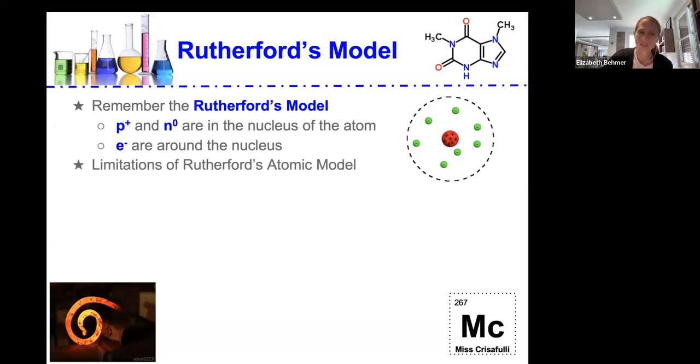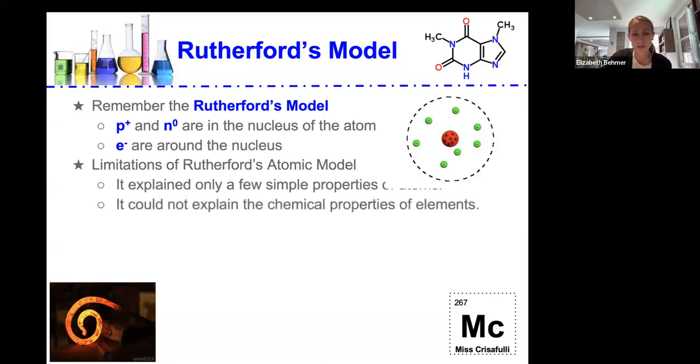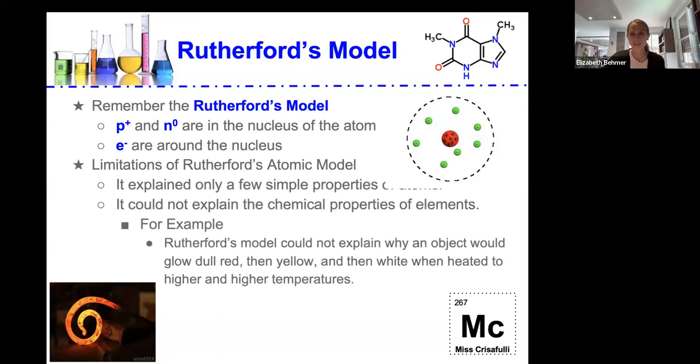However, there were some limitations to Rutherford's atomic model. It explained only a few simple properties of the atoms, and it could not explain the chemical properties of all the elements. For example, Rutherford's model could not explain why an object would glow dull red, then yellow, and then white when heated to higher and higher temperatures. So we're going to try to address some of those problems.